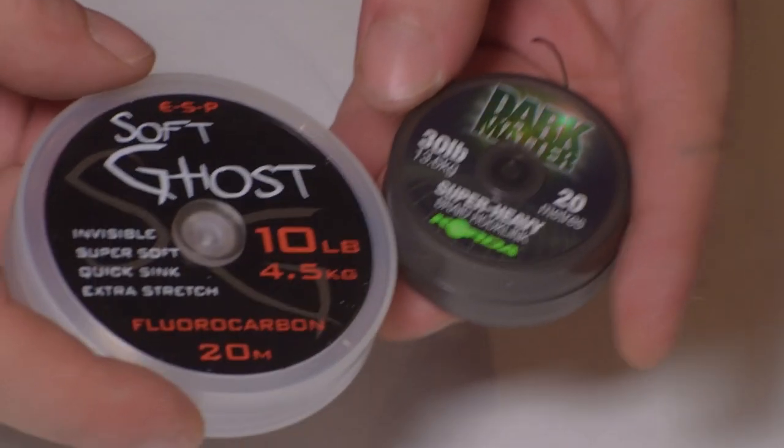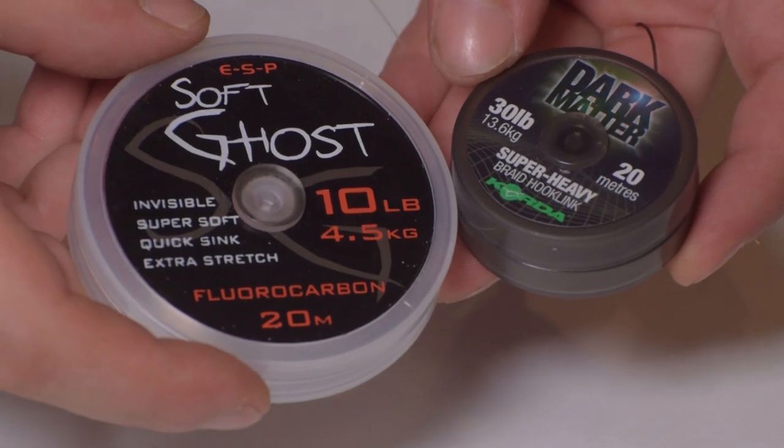So what we're gonna do is we're gonna learn how to make the most simplest of carp rigs that there is. Hair rig is quite simple. We need some hook link. Now you can use any types of hook links that you want to use. It's simple to get your head around this.